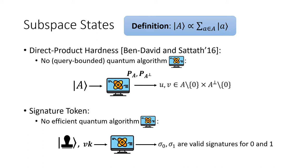Ben David and Sattath show that subspace states give applications to a signature token. We can think of valid signatures for message 0 as a non-zero vector for subspace A, and valid signatures for message 1 as a non-zero vector for subspace A-perp. Therefore, a signing token is a subspace state for A, and the verification key is the membership checking oracle for both subspace A and A-perp. However, the drawback is that the construction is only provably secure relative to classical oracles, requiring VBB obfuscation.